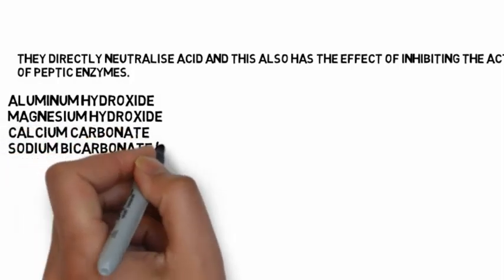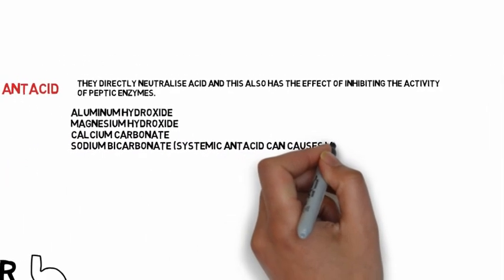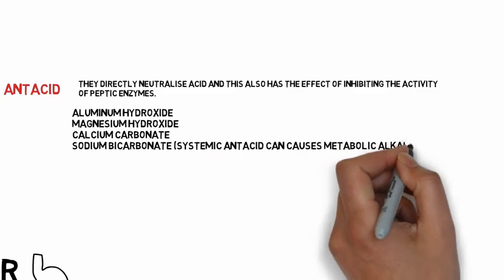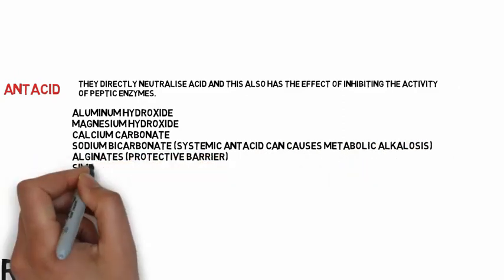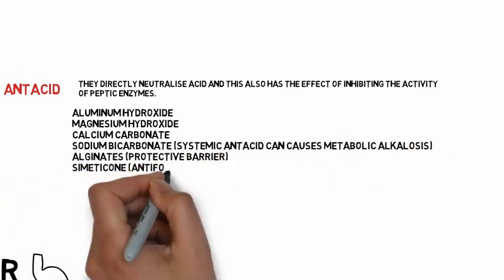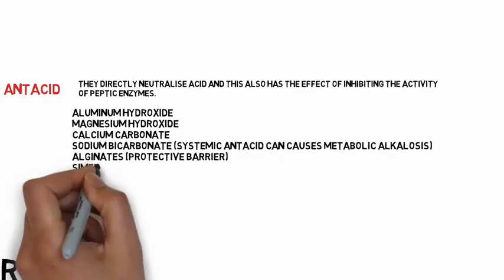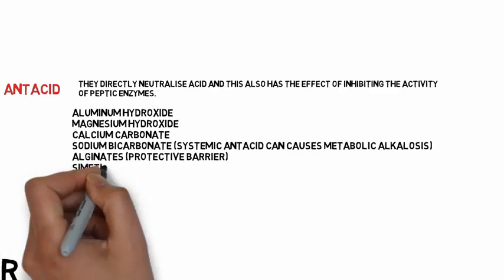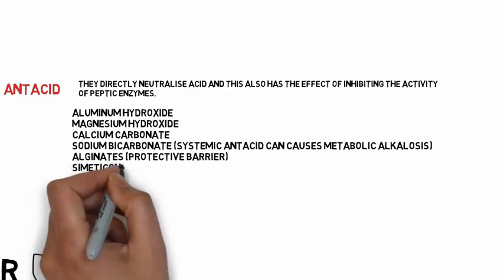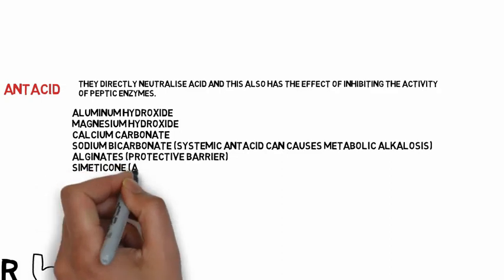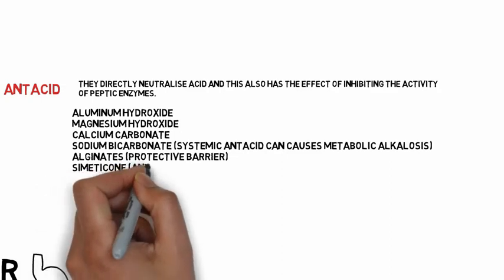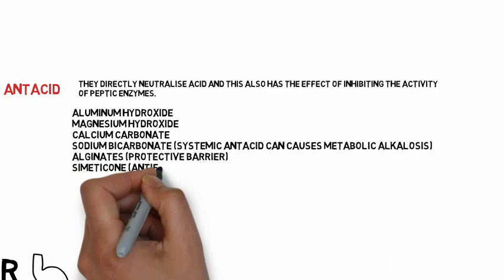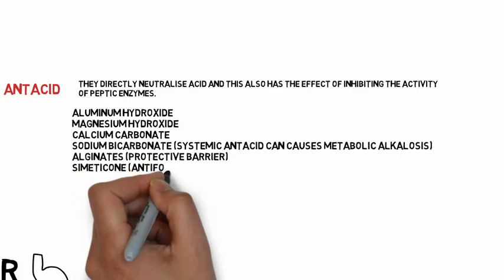Antacids relieve the pain of dyspepsia and acid indigestion and enable peptic ulcers to heal. Sodium bicarbonate can be absorbed systemically and can produce transient metabolic alkalosis; it is also known as a systemic antacid. Most antacids in common use are salts of magnesium and aluminium. Magnesium salts cause diarrhea and aluminium salts cause constipation, so mixtures of these two can be used to preserve normal bowel function.